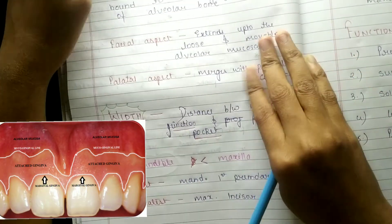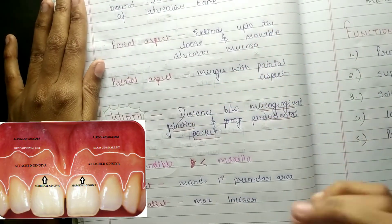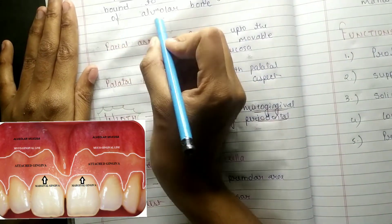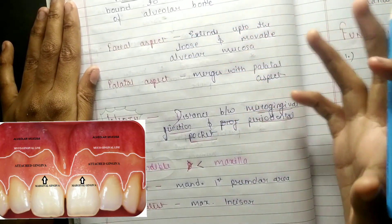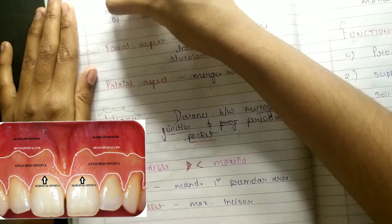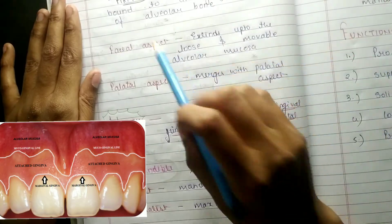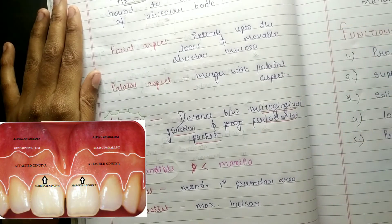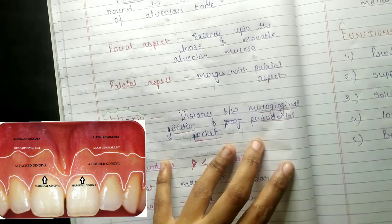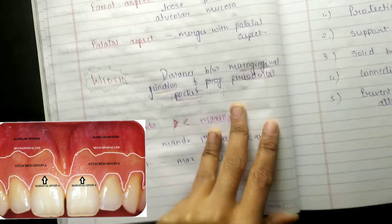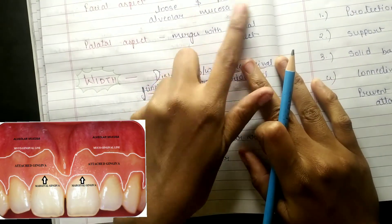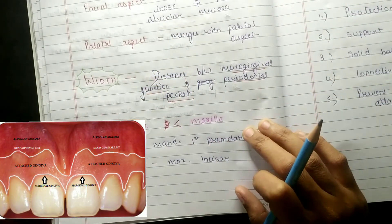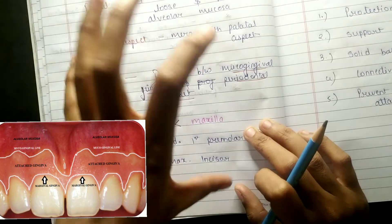Coming to the definition: attached gingiva is firm, resilient, and tightly bound to the underlying periosteum of the alveolar bone. This is a very important line — firm, resilient, and tightly bounded to the underlying periosteum of the alveolar bone. From the facial aspect, it extends up to the loose and movable alveolar mucosa, whereas the palatal aspect is merged with the palatal mucosa.